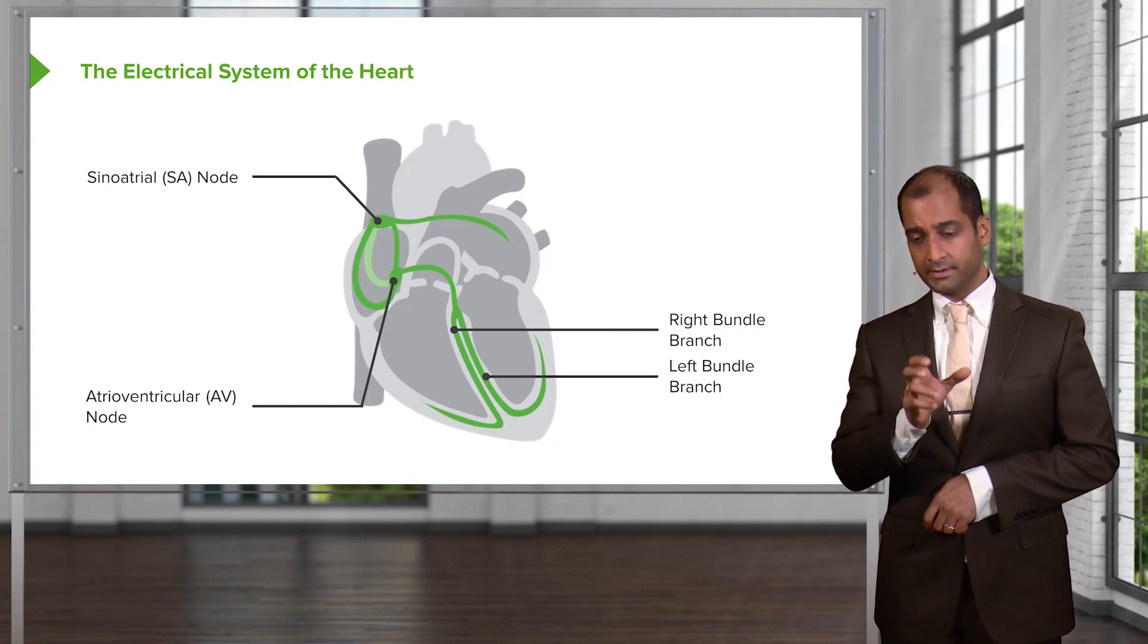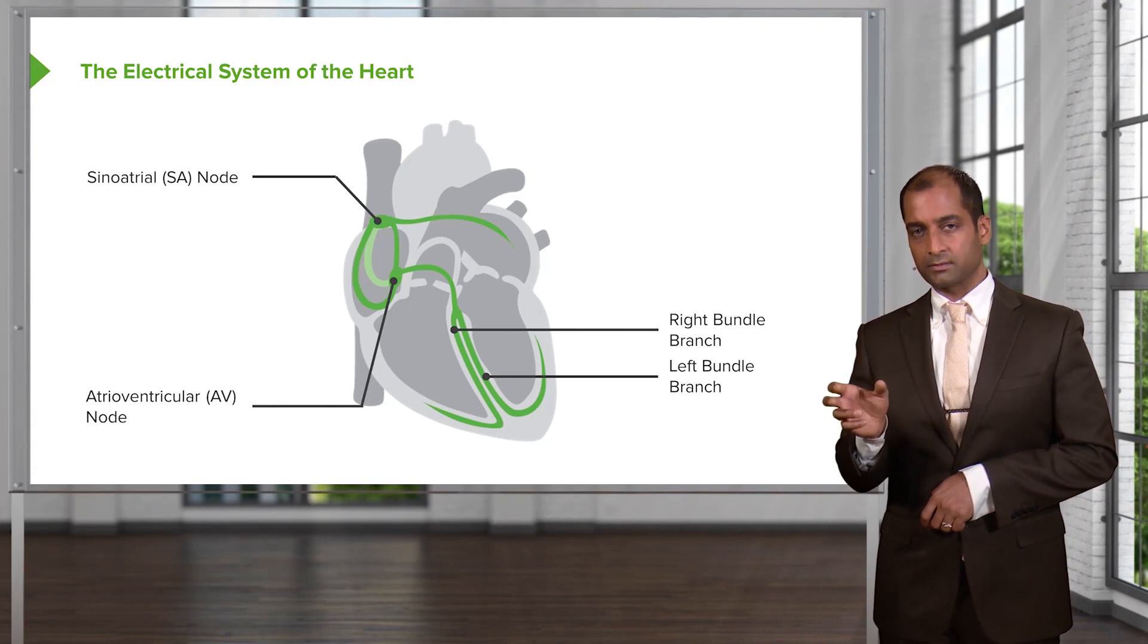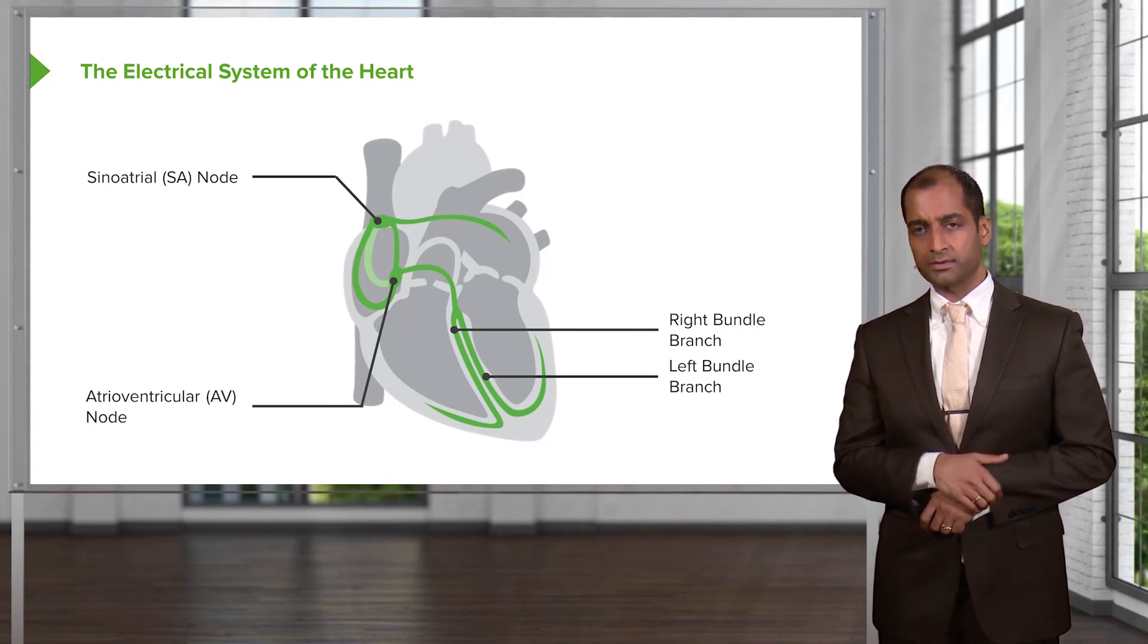Go back and review the difference between a fixed split, most common diagnosis there, atrial septal defect. This is widened split with the right bundle branch block.